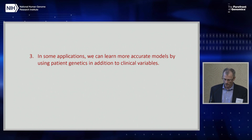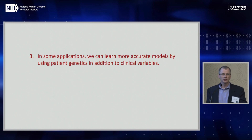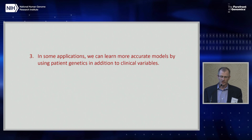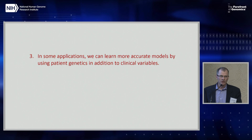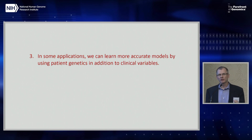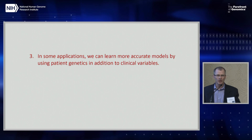Another lesson is that in some applications we can learn more accurate models by incorporating patient genetics. In the VTE case, we augmented features with about 30 SNPs identified in GWAS. The SNPs had predictive value, but that value was completely swamped by the clinical data — once you've seen the clinical history, it captures all the information present in the genetic data.